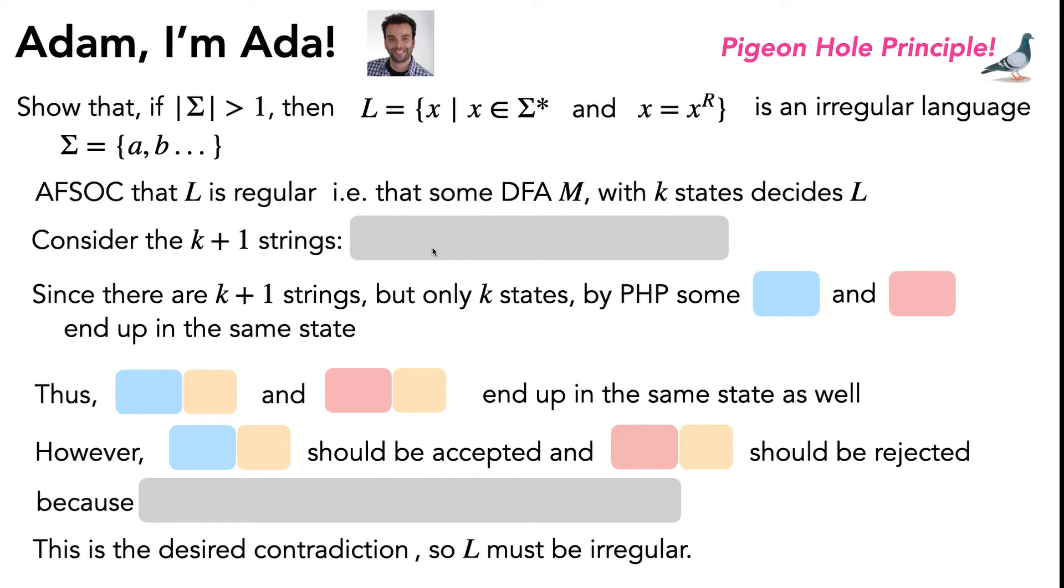So the k+1 strings I'm going to pick here are a to the n b for n from 1 to k+1. So this is just to make it really clear that we've got k+1 strings. And to visualize this, we can kind of write it out that what this is really saying is the strings with 1a then a b, 2as then a b, 3as then a b, so these are going to be our k+1 different strings.